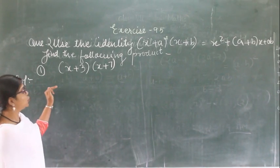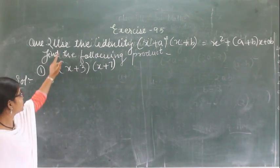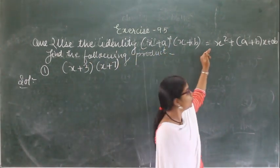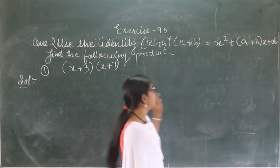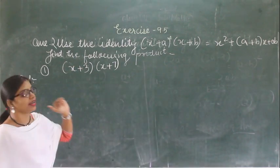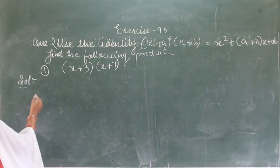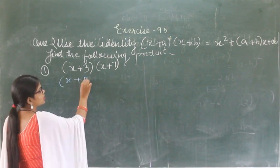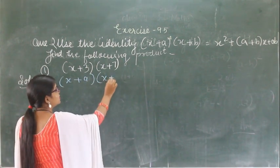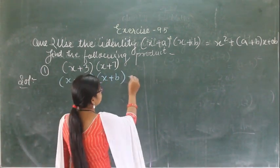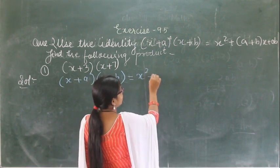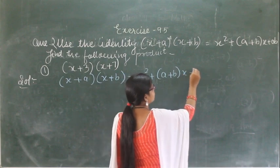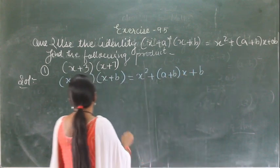This is question number 2. In this question it says: use the identity (x plus a)(x plus b) equals x square plus (a plus b) into x plus ab, and find the product. So here first I am writing the identity: (x plus a)(x plus b) is equal to x square plus (a plus b) into x plus ab. This is the identity. By using this identity we have to find the product.